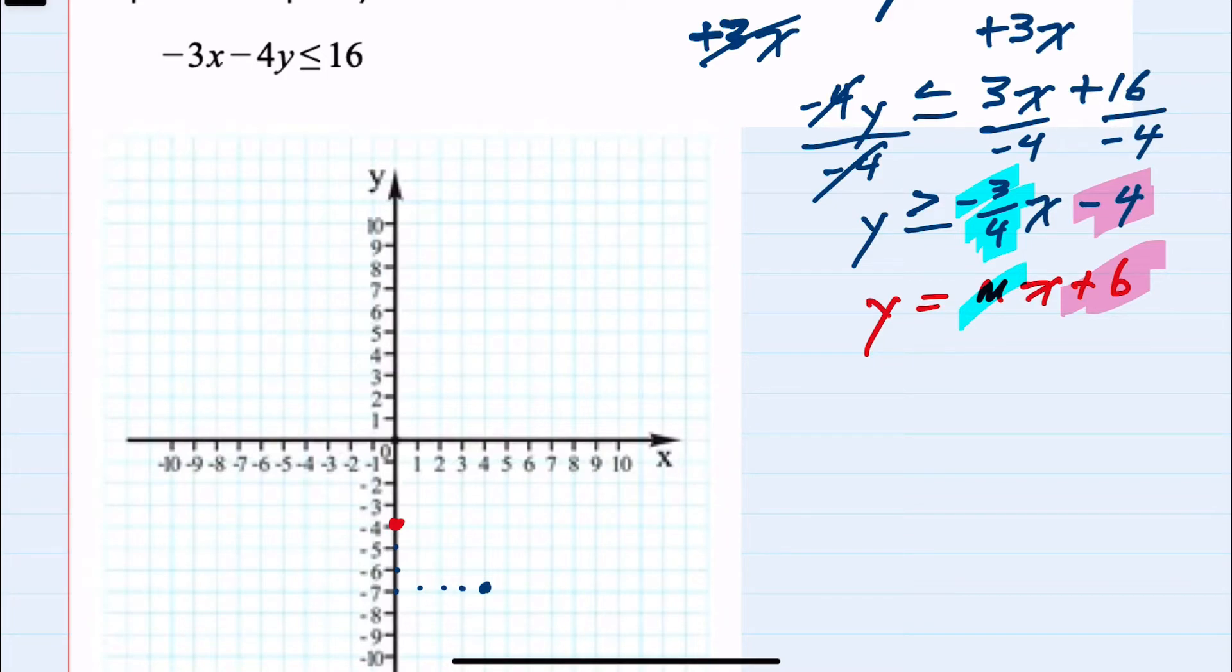Looking back at the original inequality, it's less than or equal to. Since it includes 'or equal to,' this is a solid line. If it were just less than or greater than, we'd draw a dotted line.